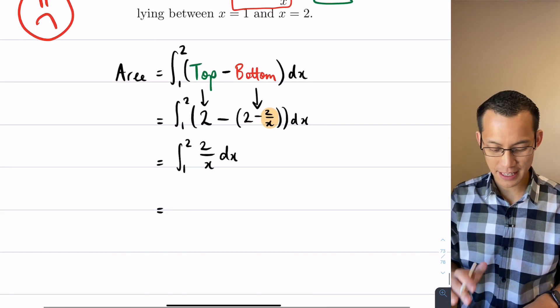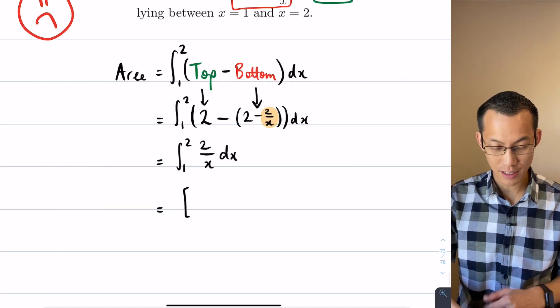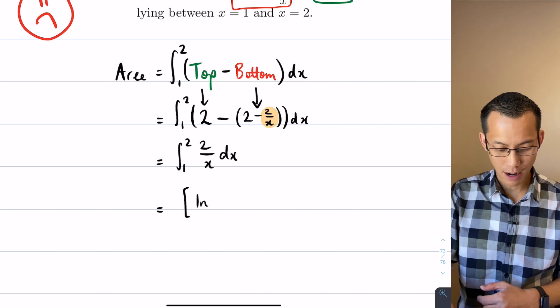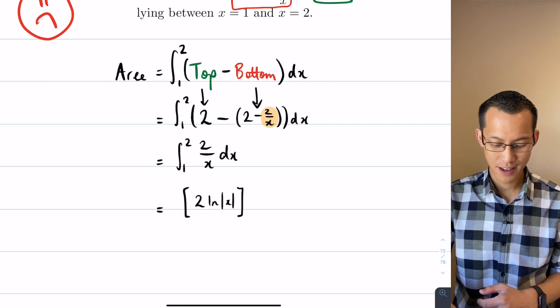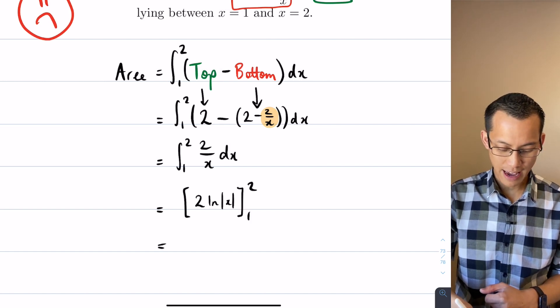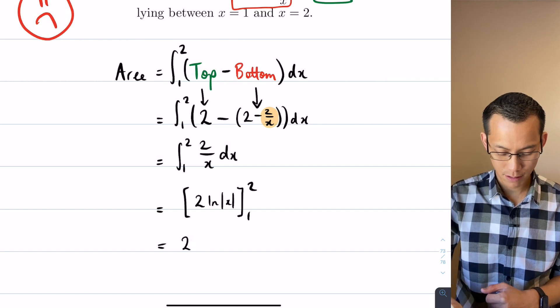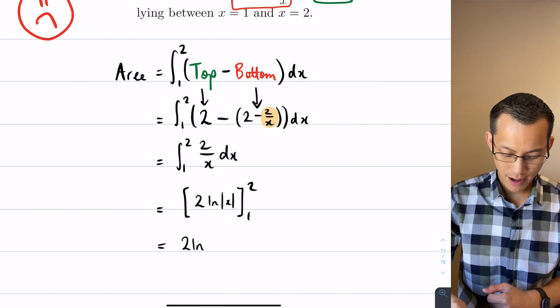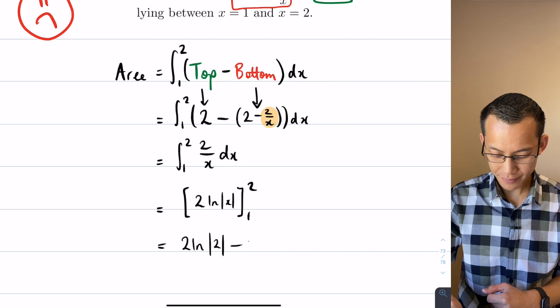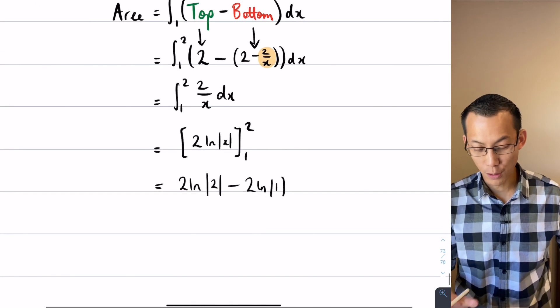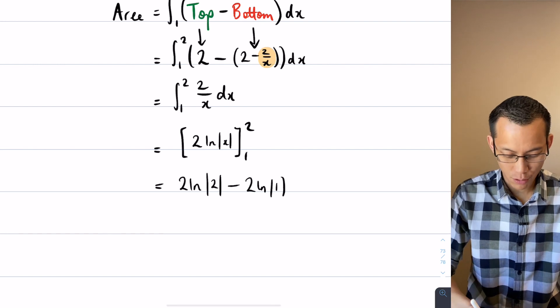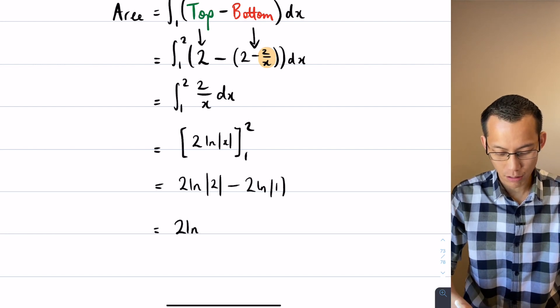And by now, hopefully we're familiar enough that this is just going to give us as a primitive log, rather two log the absolute value of x. There's our primitive function. Substitute in one and two, and pretty rapidly you're going to get—let's do the two there and then the one there. This is just like before: log of one is zero, so all you get is two log two.